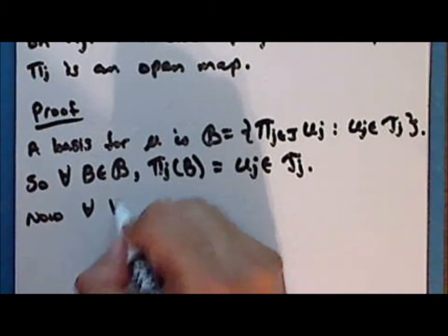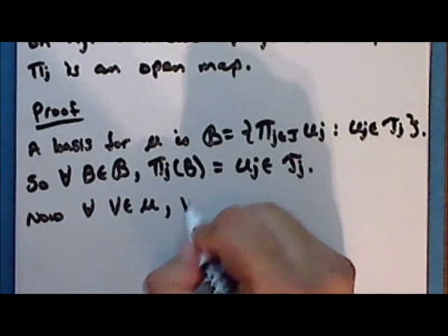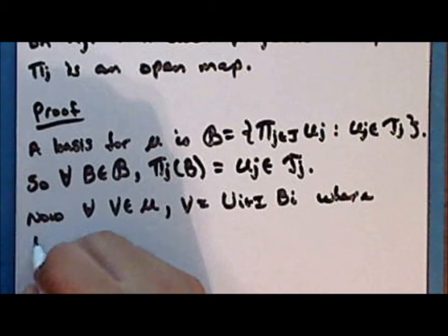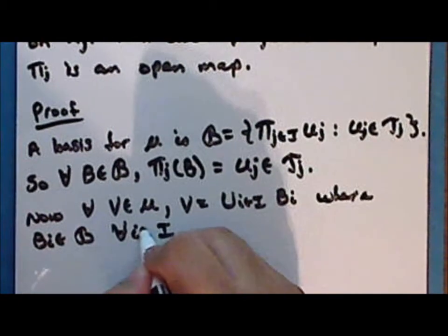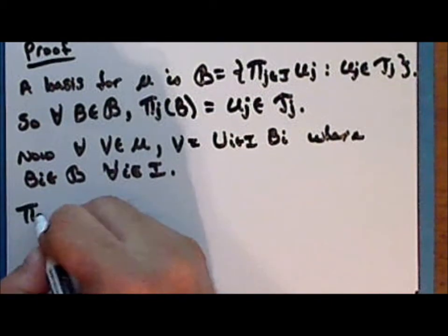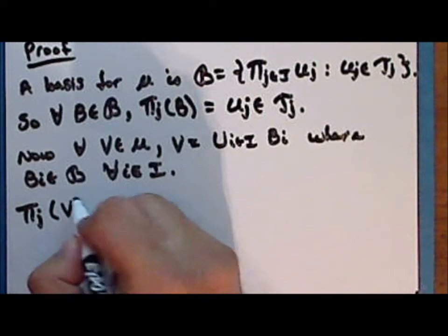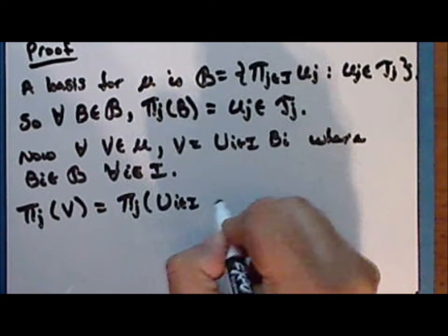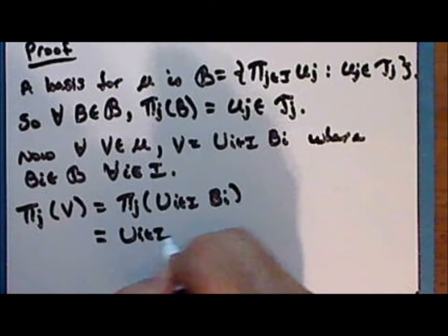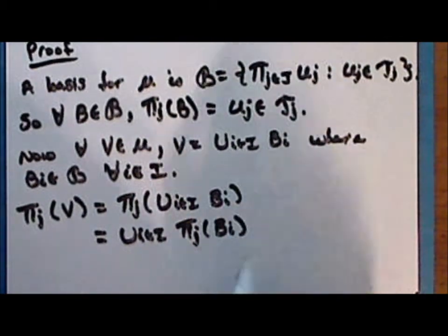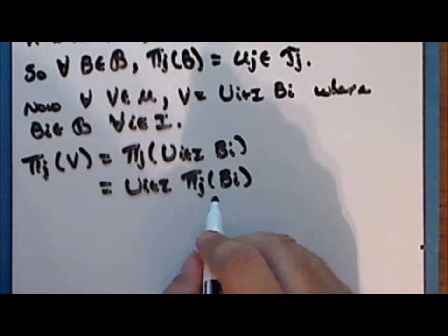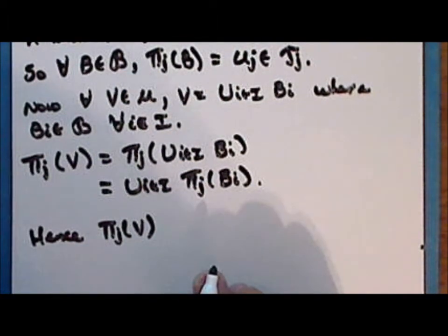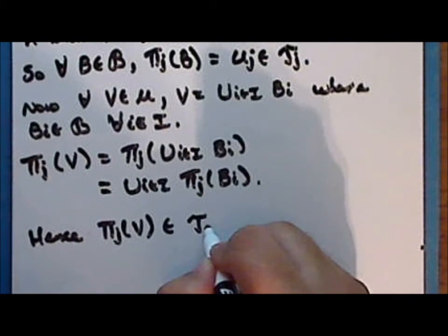Now for every open set in the box topology, that open set is a union of some basis elements. So the direct image under the j-th projection map of an open set in the box topology is the direct image of a union of basis elements, which is a union of the direct images of those basis elements. These are all open in the factor space x sub j, and hence it is a union of open sets. Therefore the direct image of an open set in the box topology is open in the factor space x sub j.